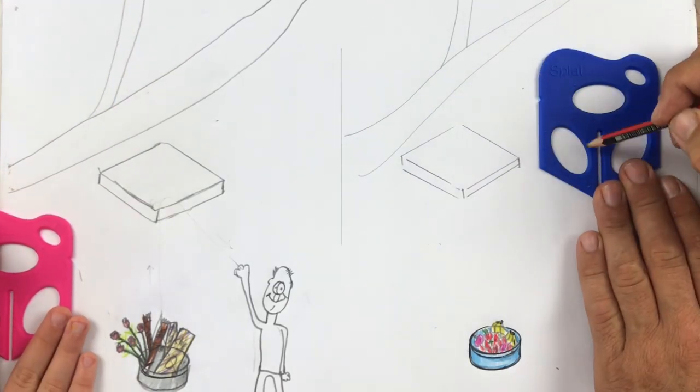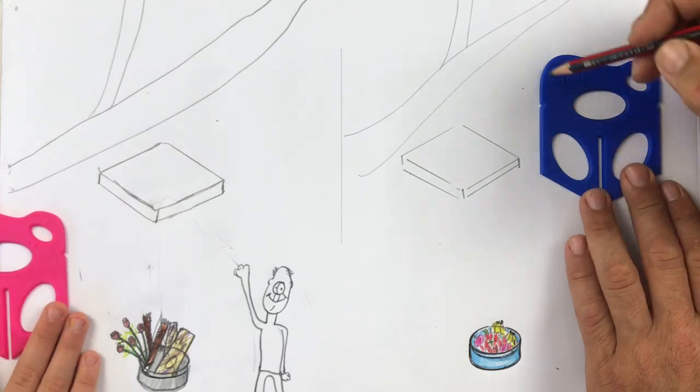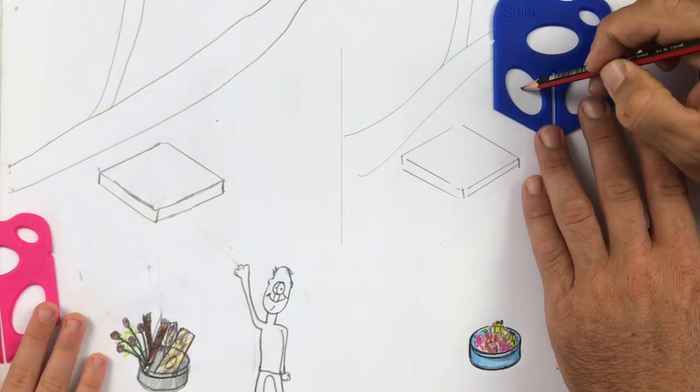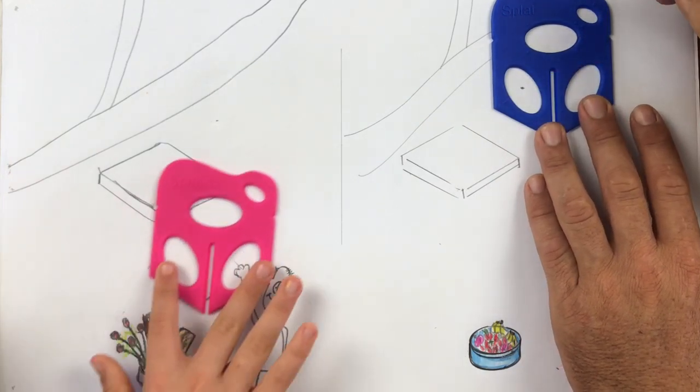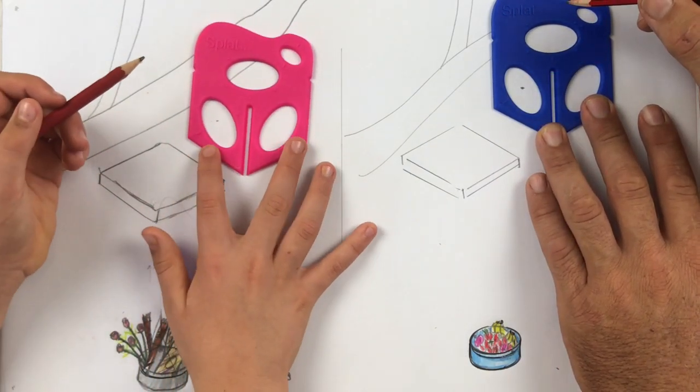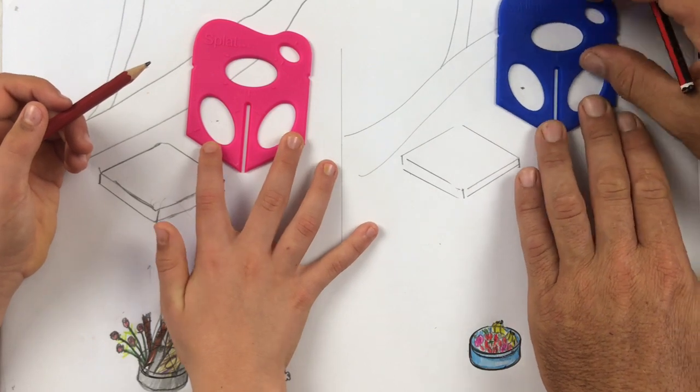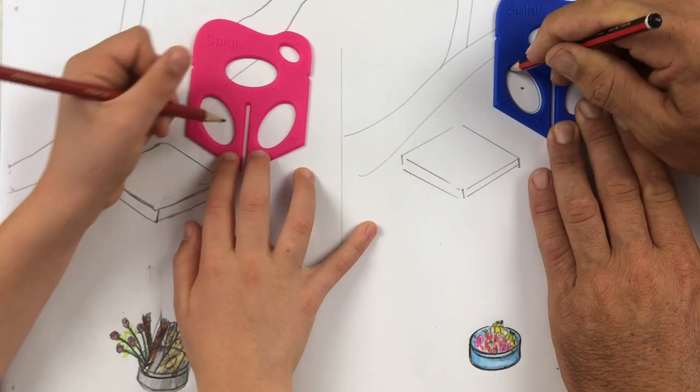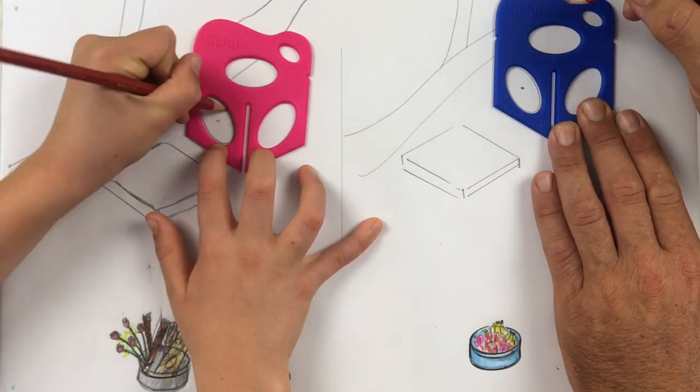I'm going to use this left ellipse, and I'm going to give myself a starting point. I'm going to center that onto there. Go ahead and do that. Good. I can see you've got your splat straight up and down, which is the way to go. Now draw in a full ellipse.